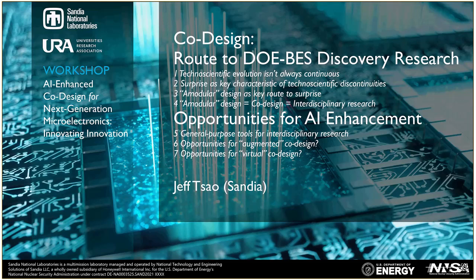The chain of ideas I plan to run through today is outlined here. The first idea is that evolution, particularly technoscientific evolution, isn't always continuous — sometimes it's discontinuous. The second idea is that surprise is a key characteristic of those technoscientific discontinuities. The third idea is that there is a kind of design called amodular, and this kind of design is a key route to surprise.